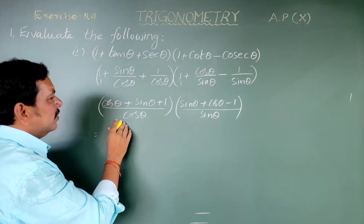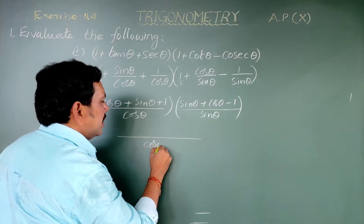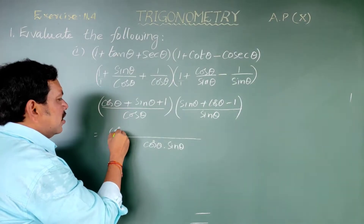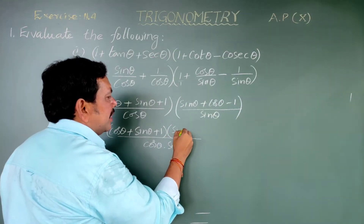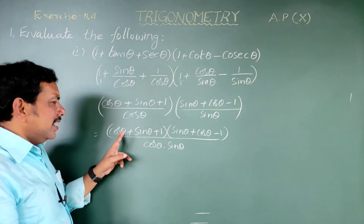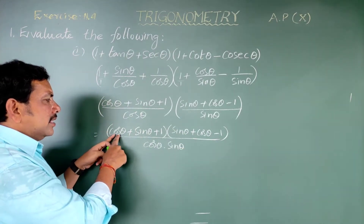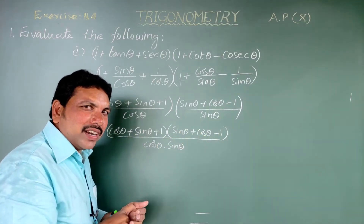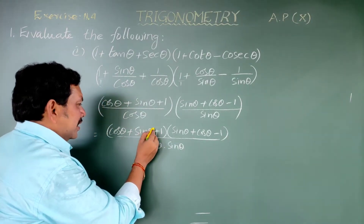Multiply these two expressions. In the numerator, this is cos theta plus sin theta plus one, and this is also cos theta plus sin theta minus one. So now it is in the form of (a+b)(a-b), where a is cos theta plus sin theta and b is one.